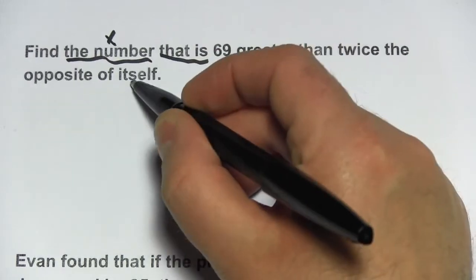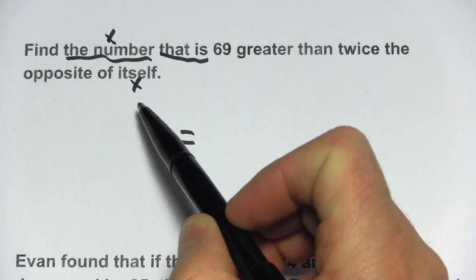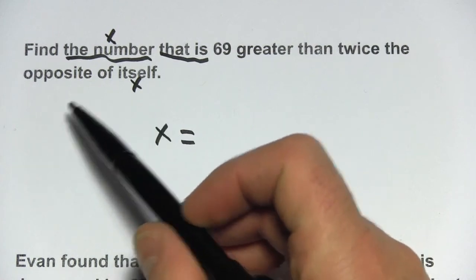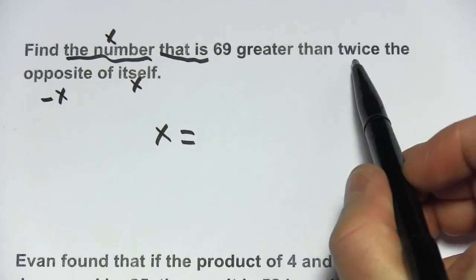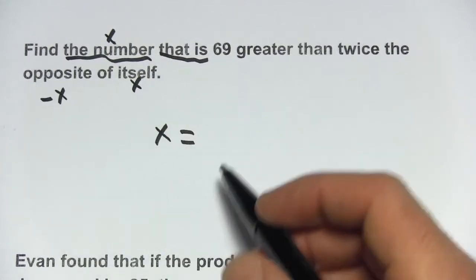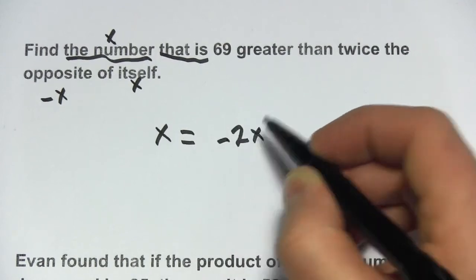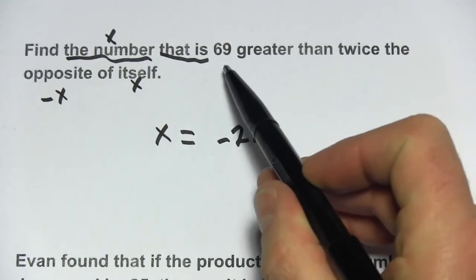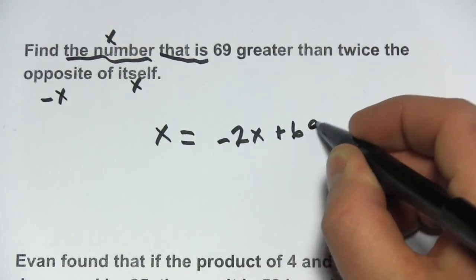Well, itself is just x. The opposite of itself, the opposite of a number is the negative. So the opposite of itself is negative x. Twice the opposite of itself is 2 times that, so I could write that as negative 2x. And then we want something 69 greater than that, so we just add 69 to it.